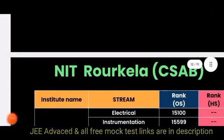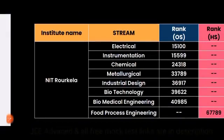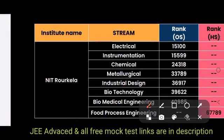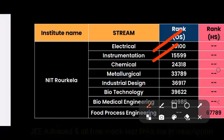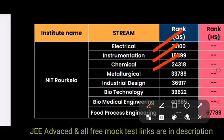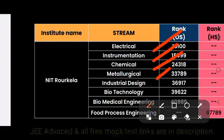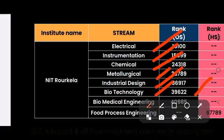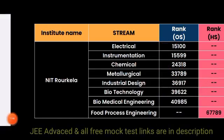For NIT Roorkee through CSAB, Electrical is 15,000 for other state. Instrumentation is 15,599. Chemical is 24,318. Metallurgy is 33,789. Industrial and Design is 36,917. Biotech is 39,622. Biomedical Engineering is 40,985. Food Processing has no data for other state, whereas for home state it is 67,000.